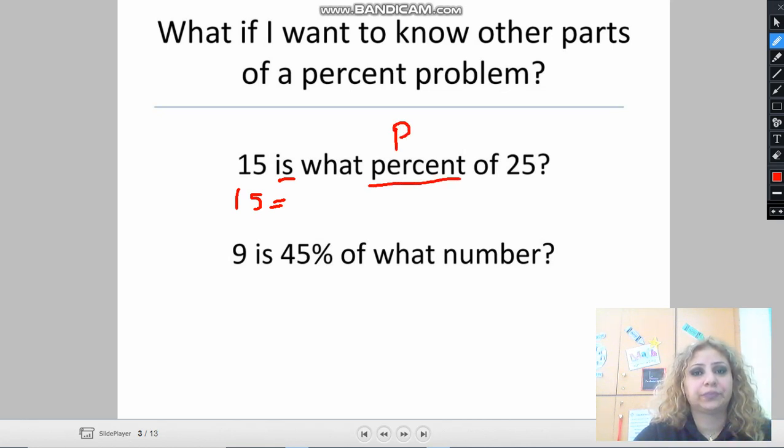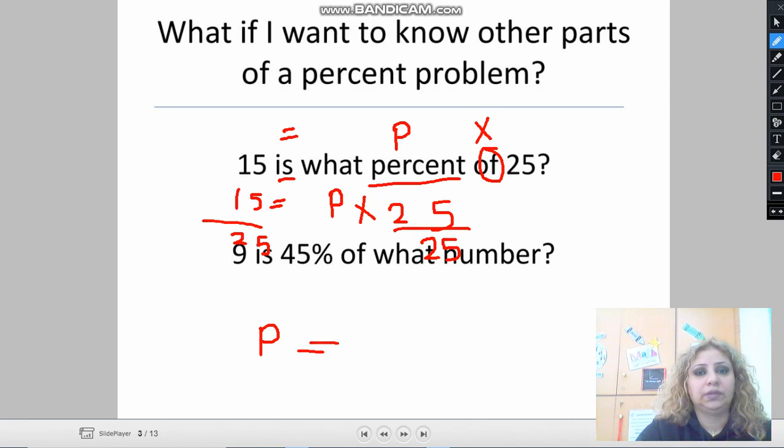Now this is a multiplication equation. I'm gonna solve it by using the inverse operation of multiplication which is division. I'm gonna divide both sides by 25. This way I can find the percent. Divide 15 by 25, you get 0.6.